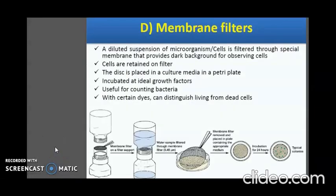The next indirect method for determination of number of cells is the membrane filter method. A suspension of microorganisms, such as in water or air, is filtered through a millipore filter membrane. The organisms are retained on the filter disc, which is then placed in a petri dish containing a suitable medium. The plates are incubated and colonies are observed on the membrane surface. A large volume of sample can be analyzed using this method, and various types of microorganisms can be detected using selective media. With certain dyes, it can distinguish living from dead cells.